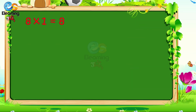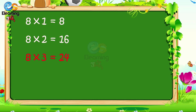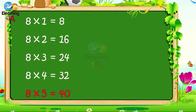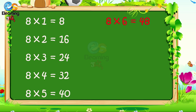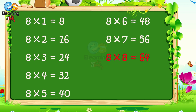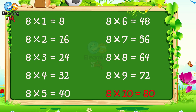8 1s are 8. 8 2s are 16. 8 3s are 24. 8 4s are 32. 8 5s are 40. 8 6s are 48. 8 7s are 56. 8 8s are 64. 8 9s are 72. 8 10s are 80.